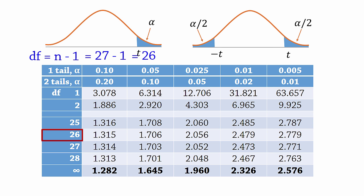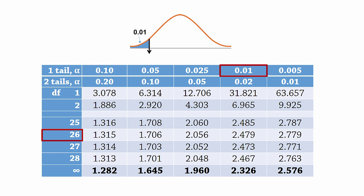Since we're conducting a one-tail test and alpha is 0.01, the corresponding critical value will be 2.479 here.